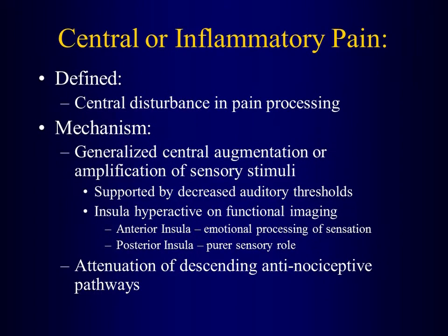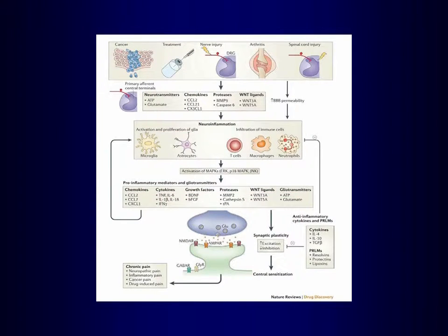The other critical characteristic of central or inflammatory pain is that it is not characterized by a recognized pain generator. We all look for pain generators — you stubbed your toe, you hurt, there's a reason. In inflammatory pain, there isn't an obvious pain generator. This is a real challenge. A variety of insults including cancer can result in neuroinflammation via multiple pathways causing increased sensitivity or augmentation with decreased negative regulation and chronic pain.